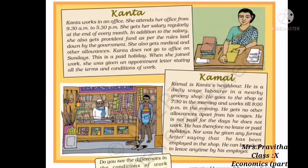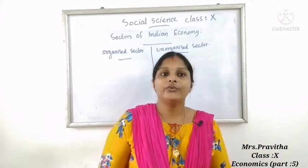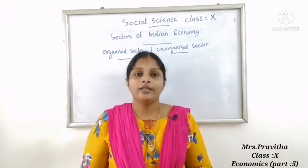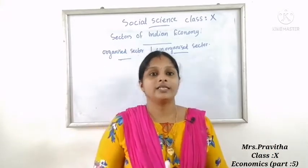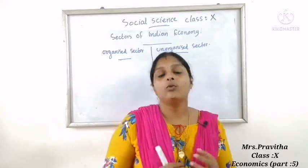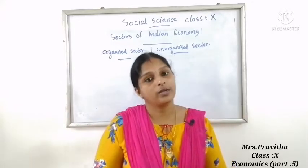So this is the case of Kanta and Kamal. From these two examples we can tell the difference between organized and unorganized sector. Now we will study more about organized and unorganized sector.